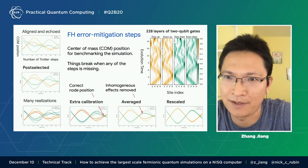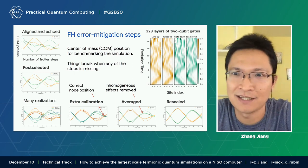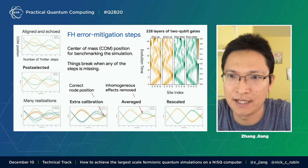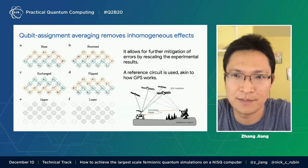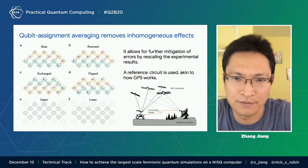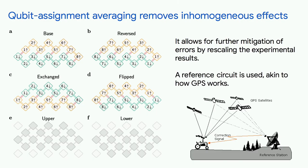And after that, we apply a technique where we use a reference circuit to rescale the result, which gives us a near-perfect result from the quantum device. We average over 16 different circuits — we choose a base circuit, and we reverse it, exchange it, or flip it, and we can choose different qubits on the chip.